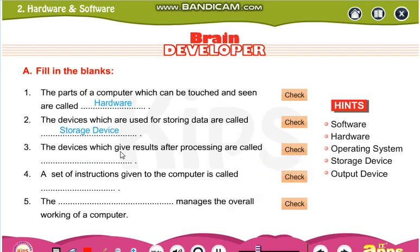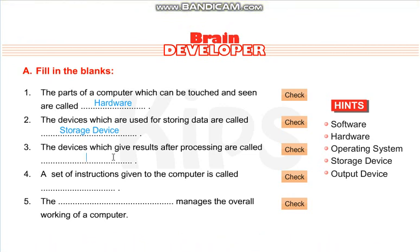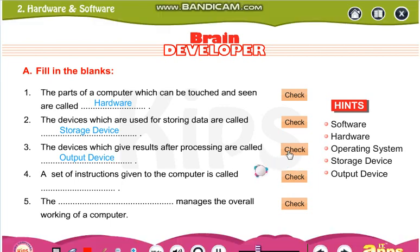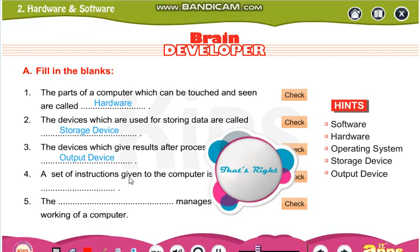The devices which give results after processing are called — after processing, where does the result go? First is your input, then processing, and then yes, your output device. Let us check. Correct.